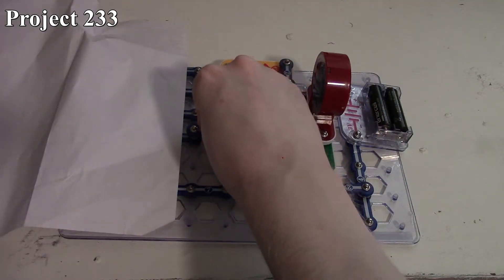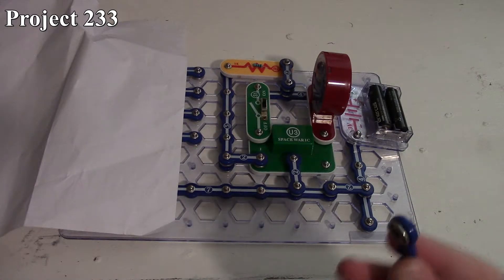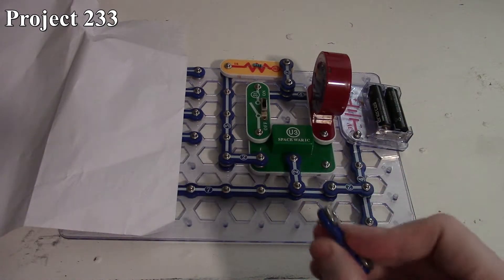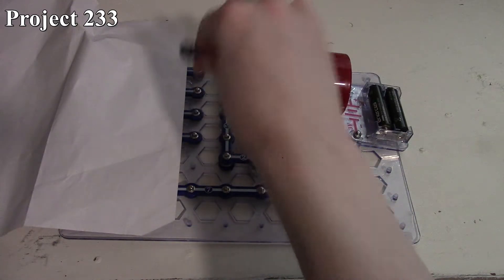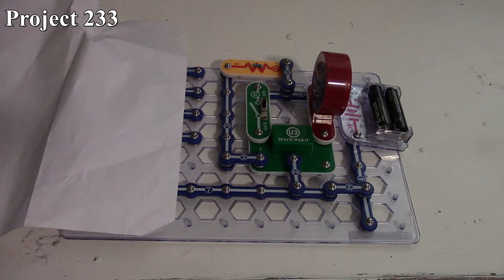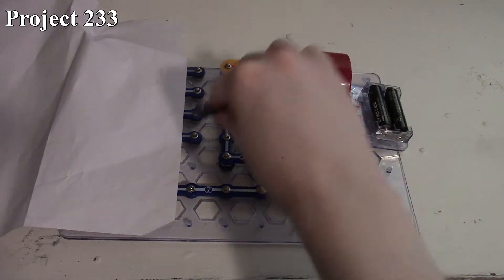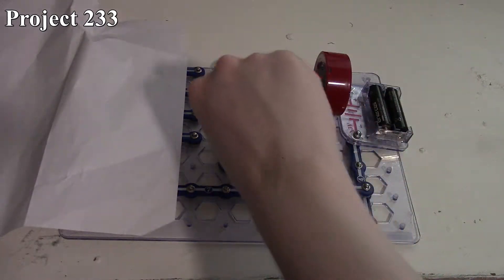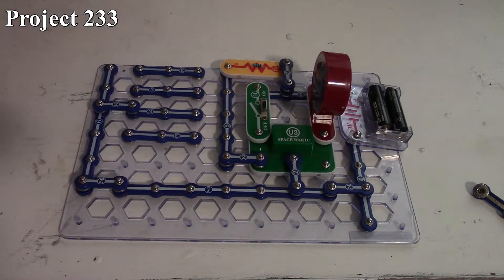For instance, if we put on the bottom one here, it doesn't sound, so that means player one would get a point. Otherwise player two would get a point if it sounded. Player two puts it here, now player two would get a point because they found where the connection point is.